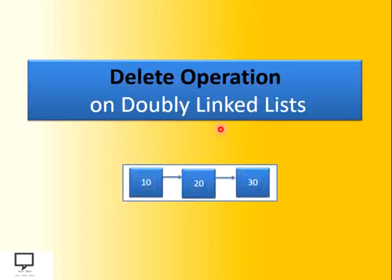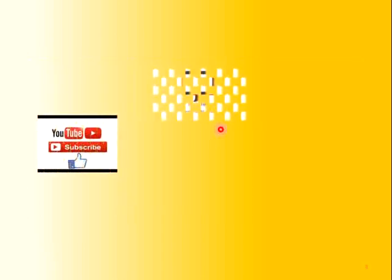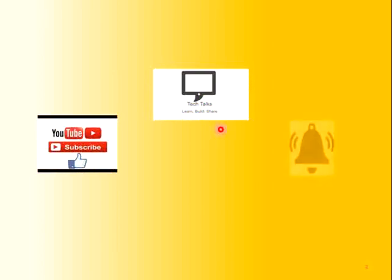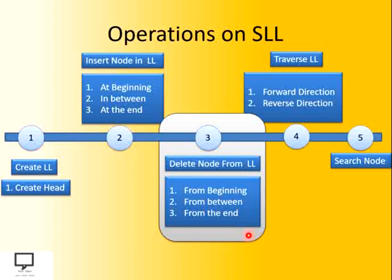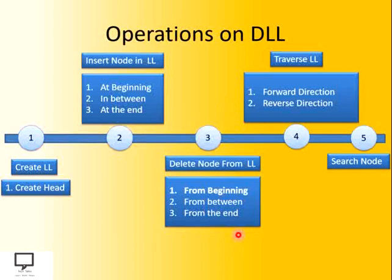Before moving to the content, I would like to request you to subscribe my channel Tech Talks and keep the bell ringing. Let's start with the delete operation on a doubly linked list. As we have seen in the insertion operation, we can insert at three different positions. In the same way, we can delete a node from three different positions. We will see what steps we are supposed to follow to delete a node from a doubly linked list.